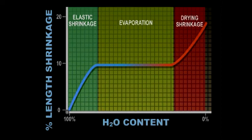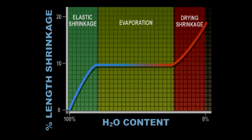In the initial stage of tumble drying, the removal of surface or non-bound water begins, and elastic shrinkage takes place. The flat part of the curve represents the area of evaporation of surface water, or non-bound water. The shrinkage doesn't increase significantly until the moisture content of the fibers falls below critical moisture.